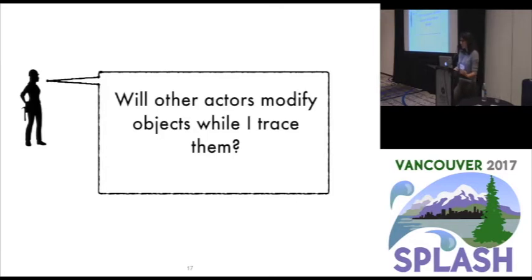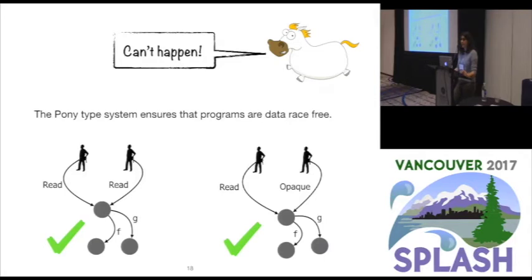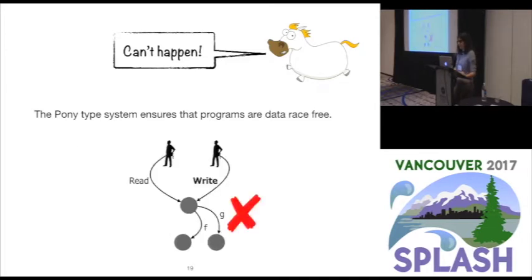Isn't it true that in concurrent garbage collectors there's a problem of data races during tracing? If I'm doing tracing, don't I need other actors to not mutate the object graph? Well, it can't happen in Pony, because the type system ensures data-race freedom. This means that if several actors share an object and they all read from it, there is no problem. If there is an actor that can write to an object's fields, then we have the guarantee that no other actor can read from those fields. So during tracing, if an actor is reading the graph, there won't be any actor in the system able to mutate it — and this allows us to avoid synchronization mechanisms.